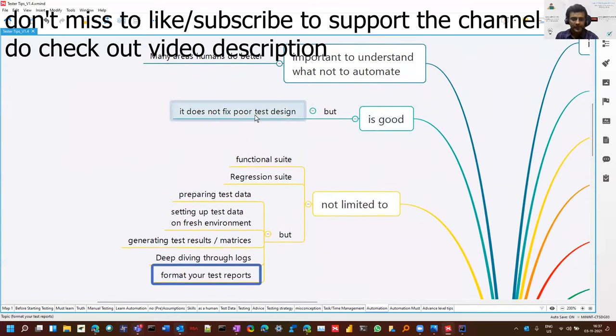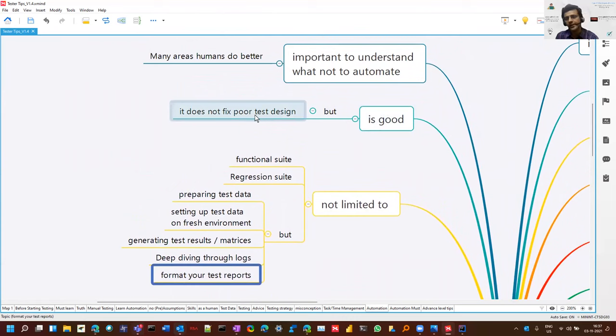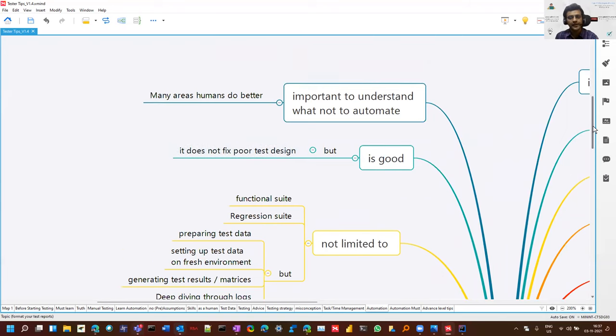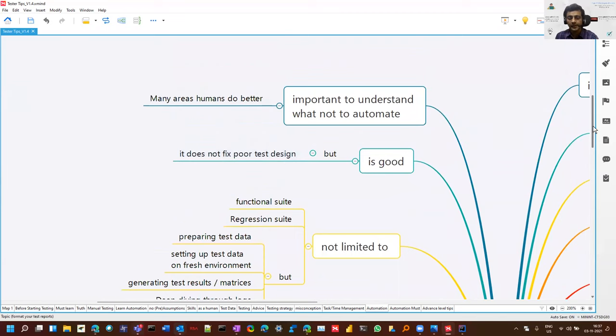Automation is good, but it cannot fix poor test design. If I write some invalid 10 test cases, then the automation would run me the invalid 10 cases. They will run, but they will not produce any benefit out of it. So it's important to understand what not to automate. Just don't get into automation because you have to make your coding skills better or learn automation, try to add value. And there are some areas where humans do better, leave those things for humans and decide what automation can help for.